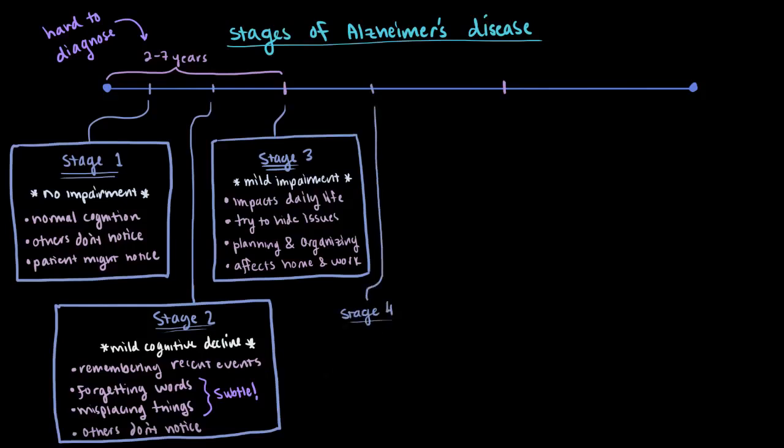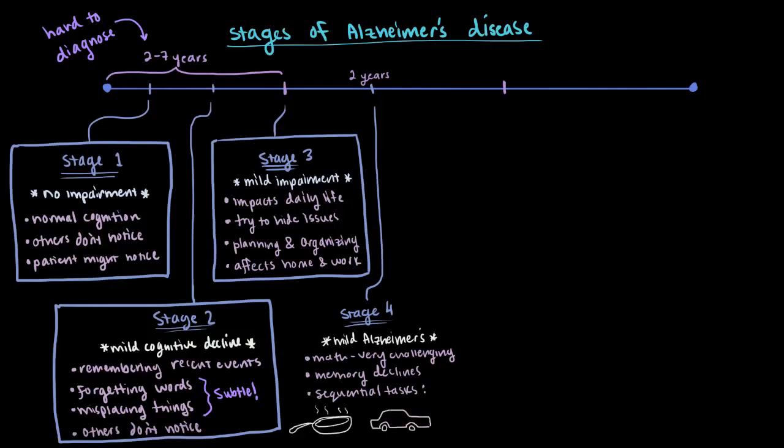Stage 4 is considered mild Alzheimer's disease. This stage lasts about two years, and during these two years, things like financials and math start to become very challenging, and the ability to remember recent events and what was just learned becomes increasingly difficult. The patient might have trouble carrying out tasks, especially if there are specific sequences like cooking or driving, but the patients are still usually able to recognize their family and friends, although a diagnosis at this stage is usually accurate.